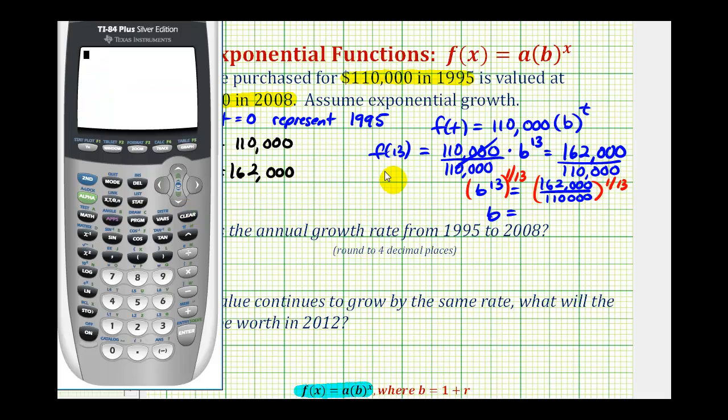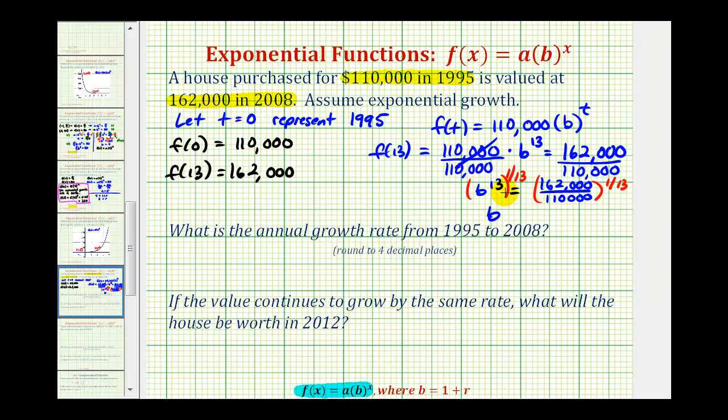And now we'll find this value here on the calculator. We do need this fraction in parentheses. We raise this to the 1/13th power. Again, the 1/13th will be in parentheses. Rounding to four decimal places, this will be 1.0302. Which means the exponential function that we'll use to determine the value of the house, when t is the number of years after 1995, will be f(t) equals $110,000 times 1.0302 raised to the power of t.